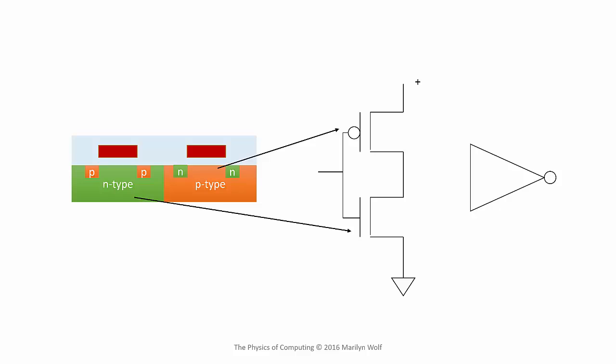The symbol for an inverter is the triangle with the circle at the tip. The output circle indicates logical inversion.